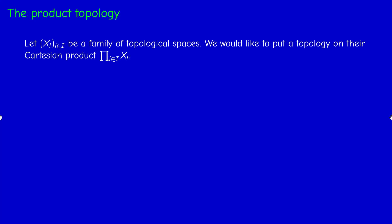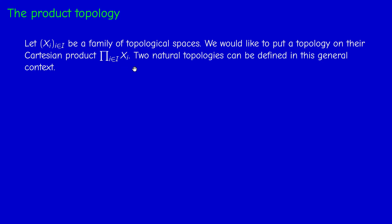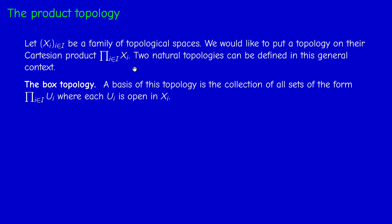Here's the construction. If you have an arbitrary collection of topological spaces X_i, we'd like to put a topology on the Cartesian product defined in a previous video — the set of functions from the index set I into the union such that f(i) belongs to X_i for each i. Two topologies come to mind. We have the box topology, by analogy to the case of just the product of two spaces. A basis of this topology is the collection of all sets of the form product of U_i, where each U_i is open in X_i — an open rectangle, a product of open sets.